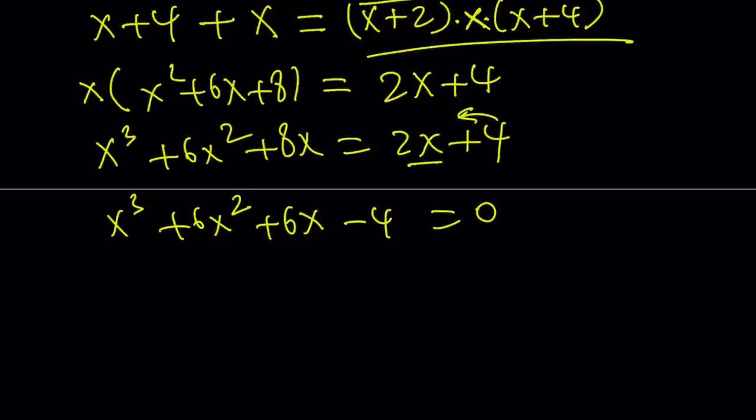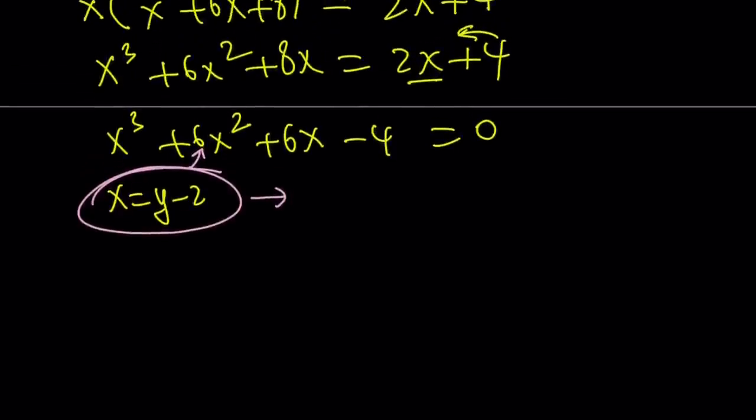And can we use the cubic formula? Absolutely. But I'm not going to use it. But I'm just going to tell you what you're supposed to do. If you replace x with y minus 2, you're going to get rid of the x squared term and 2 comes from 6 divided by 3. And then you can use Cardano's, Tartaglia's, whoever that guy is. You can do that. And we used it in a previous video, but this time we're going to do something different. We can try RRT. What is RRT? Rational root theorem.